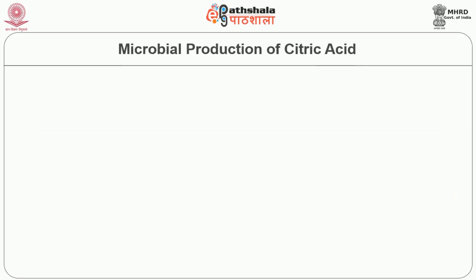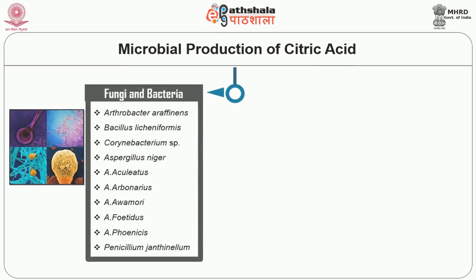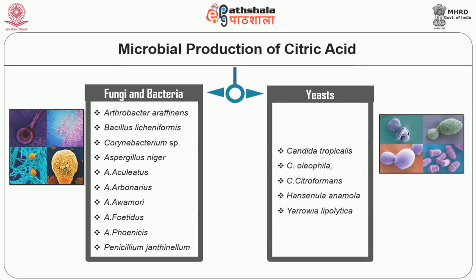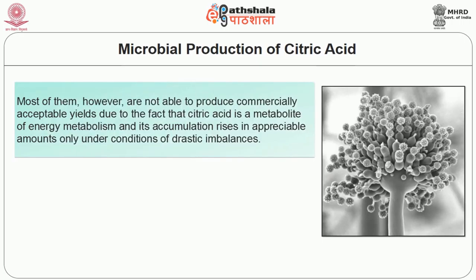A large number of microorganisms including fungi and bacteria such as Arthrobacter, Bacillus licheniformis and Corynebacterium species, Aspergillus niger, Aspergillus aculeatus, Aspergillus carbonarius, Aspergillus awamori, Aspergillus foetidus, Aspergillus phoenicis, Penicillium janthinellum, and yeasts such as Candida tropicalis, Candida oleophila, Candida citroformans, Hansenula anomala and Yarrowia lipolytica have been employed for citric acid production. Most of them, however, are not able to produce commercially acceptable yields, because citric acid is a metabolite of energy metabolism and its accumulation rises in appreciable amounts only under conditions of drastic imbalances.